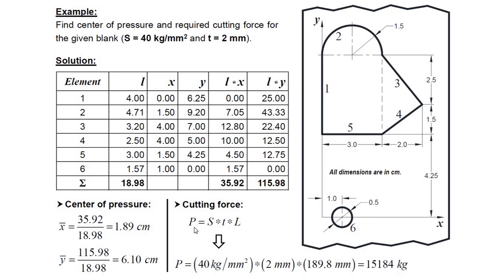We can also calculate the cutting force, as discussed in our previous video — it depends on shear strength, thickness of the material, and total cutting length. The total length of the cutting edge is 18.98 mm, thickness is 2 mm, and shear strength of the material is 40 kg/mm². The cutting force required to cut this entire blank is approximately 15,184 kg. The centre of pressure is at 1.89 cm in the X direction from the Y-axis, and 6.10 cm in the Y direction from the X-axis. This is how we calculate the centre of pressure.